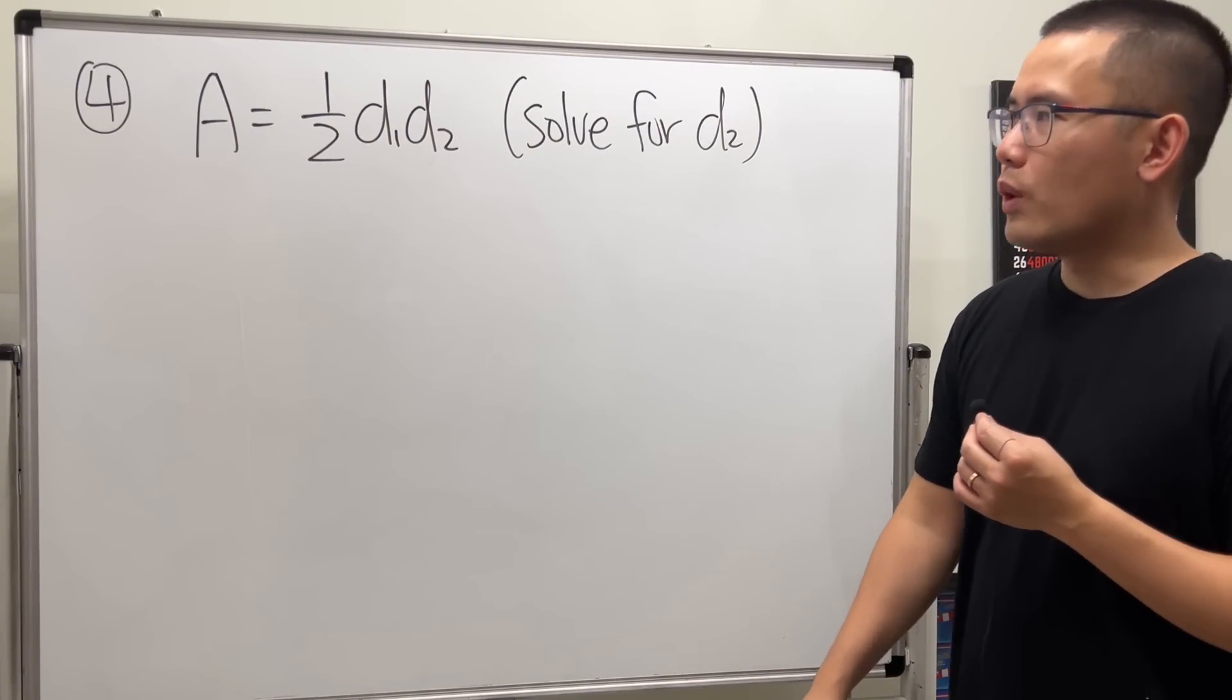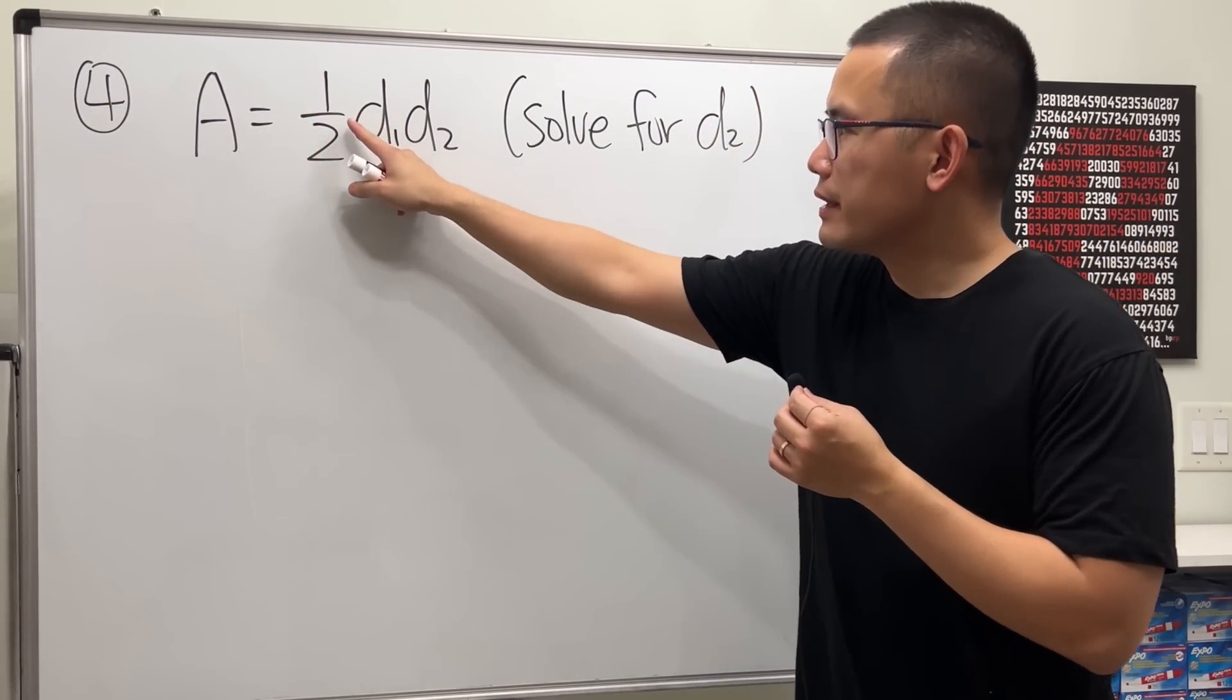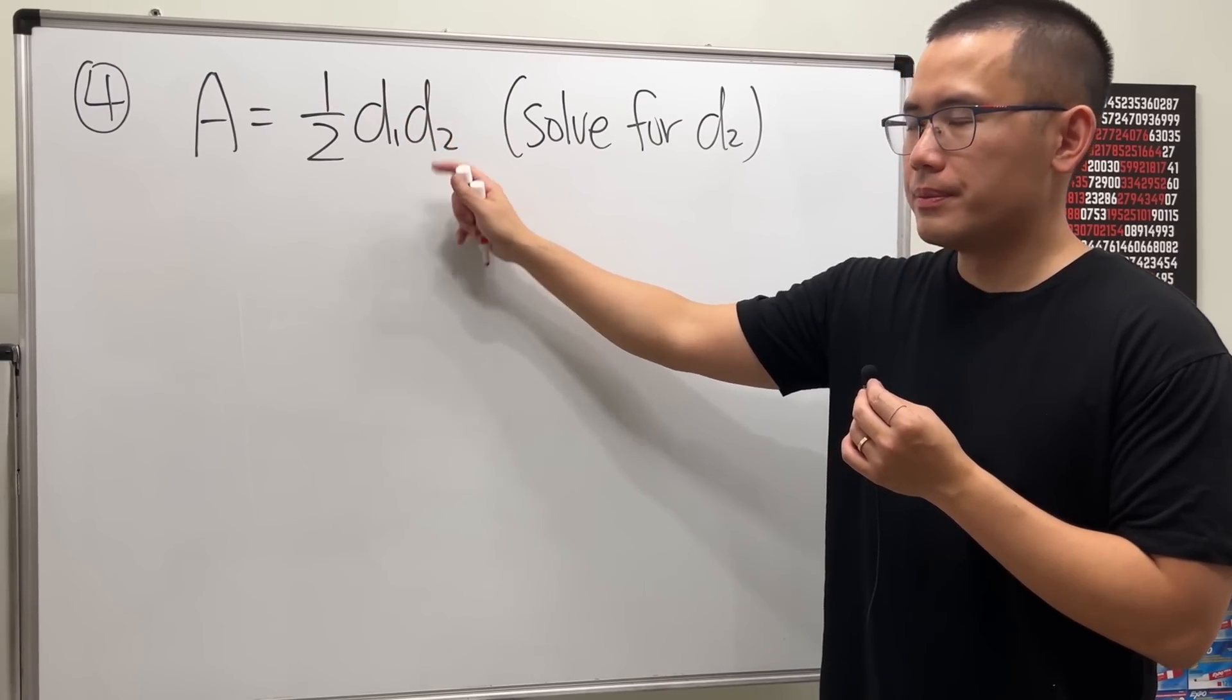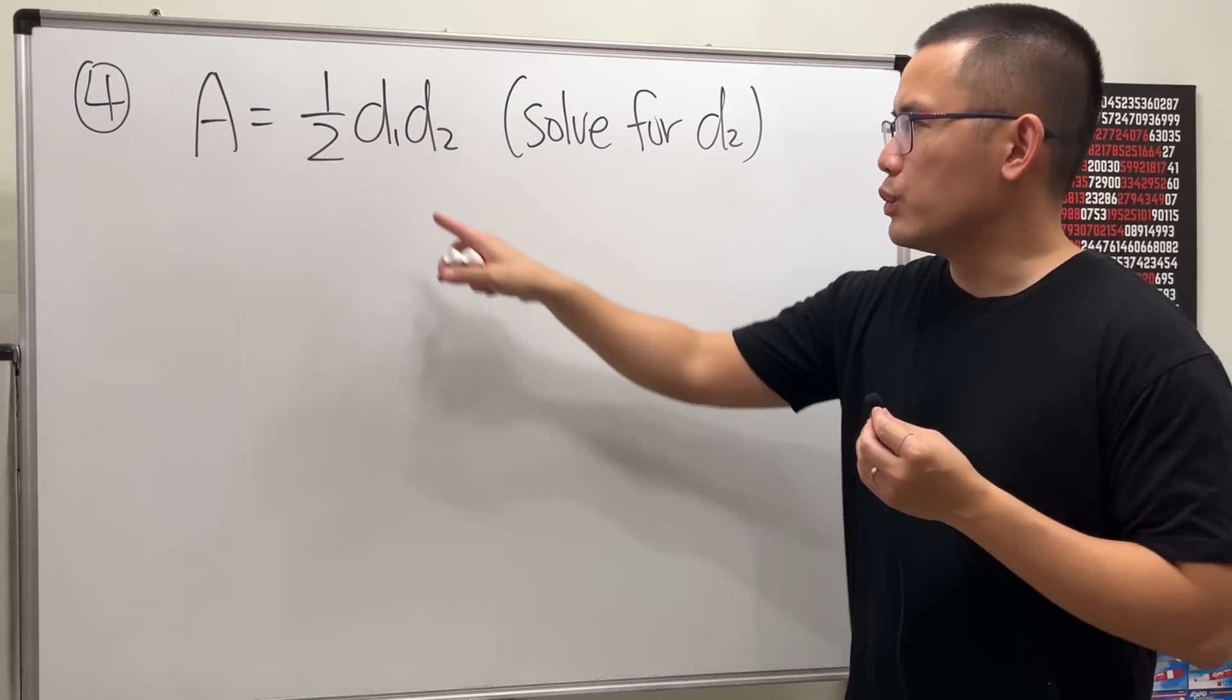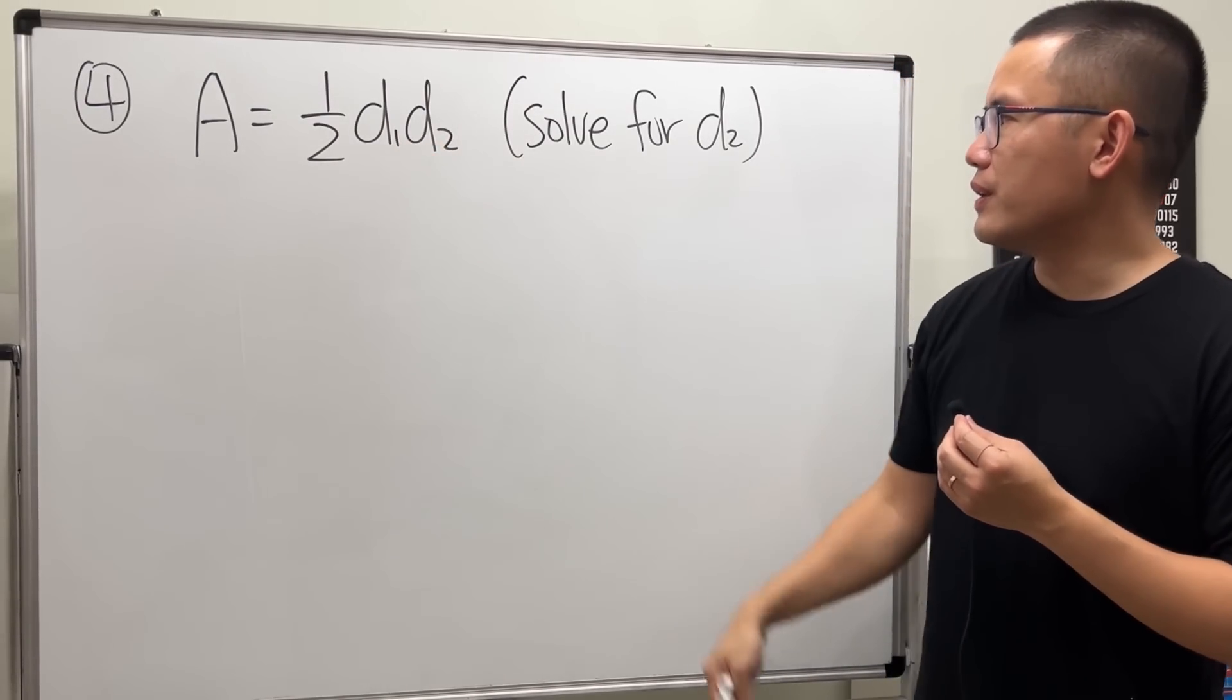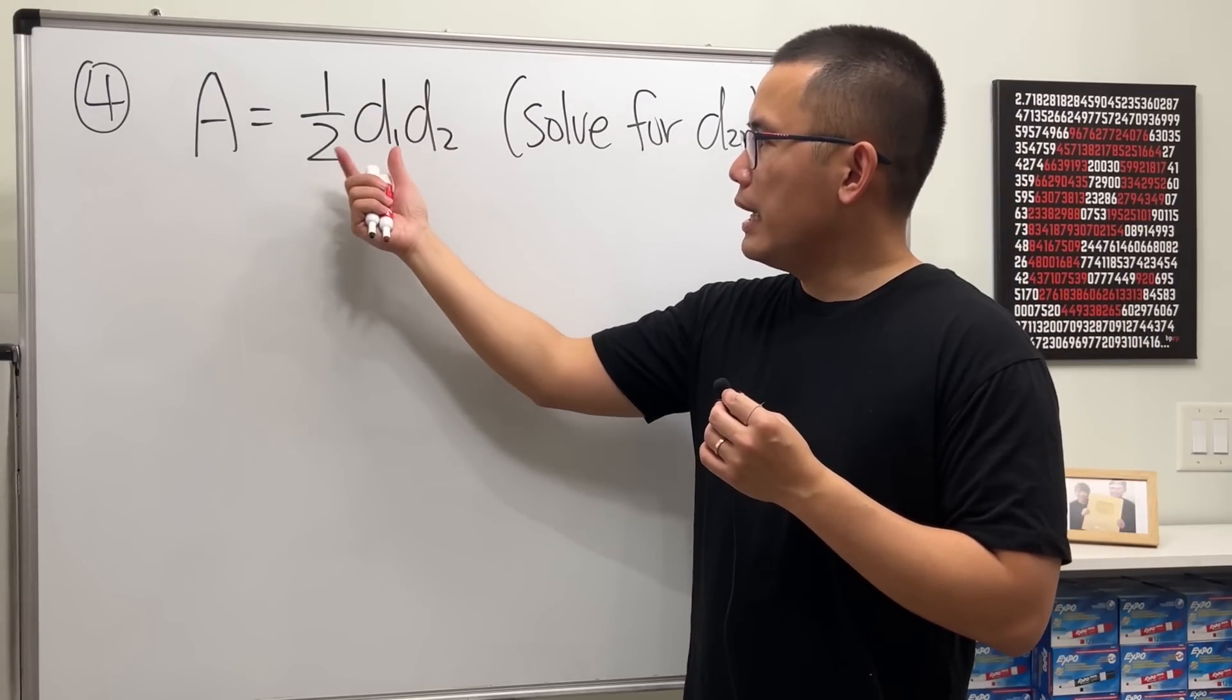Now for the fourth one, we have A equals 1 over 2 times d1 times d2. The d1 and d2, they are just like two variables with the subscripts right here, so they are different. And we are going to solve for d2. Okay, here we have d2, and...